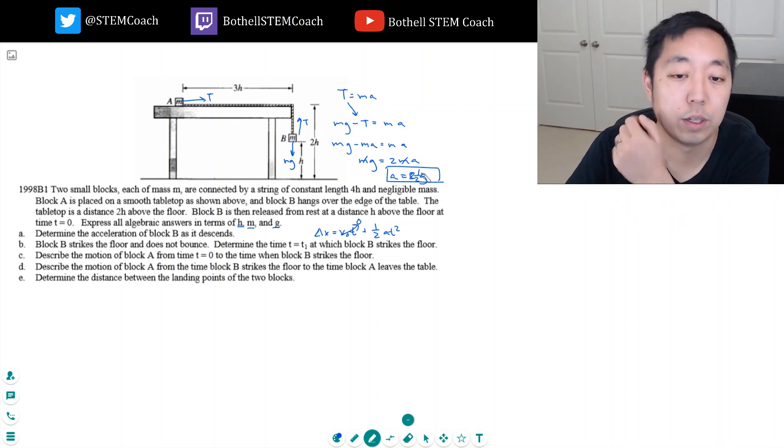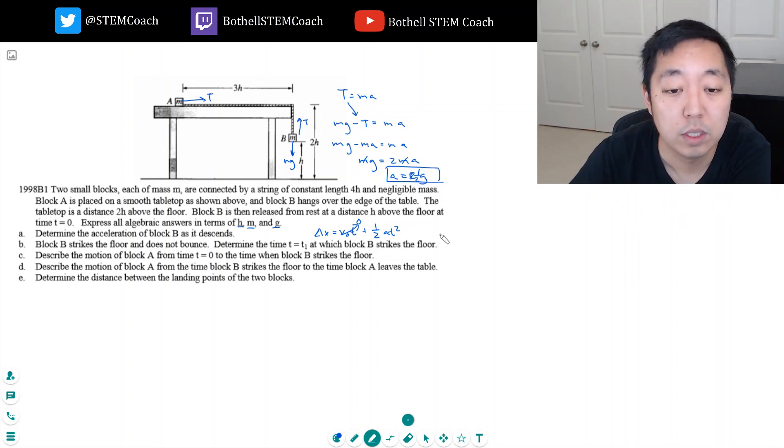So delta x, which is H here, equals one half times one half G times T squared. Solving for T: 4H over G equals T squared, or T equals the square root of 4H over G, which equals 2 root H over G. That's the time T1.